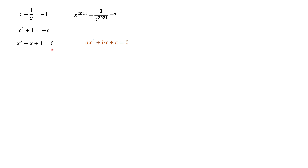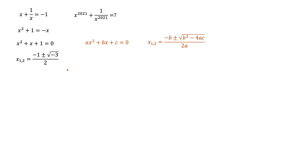Our teacher told us that if you have an equation with coefficients a, b, and c, the solution looks like this. In our case, a, b, and c all equal to 1. If you plug those numbers into this expression, you get these roots. The person who just learned how to solve quadratic equations is going to get confused, because they see the square root of a negative number, and they were told there's no such thing. So there are no real solutions, and therefore there cannot be any solutions of this equation.